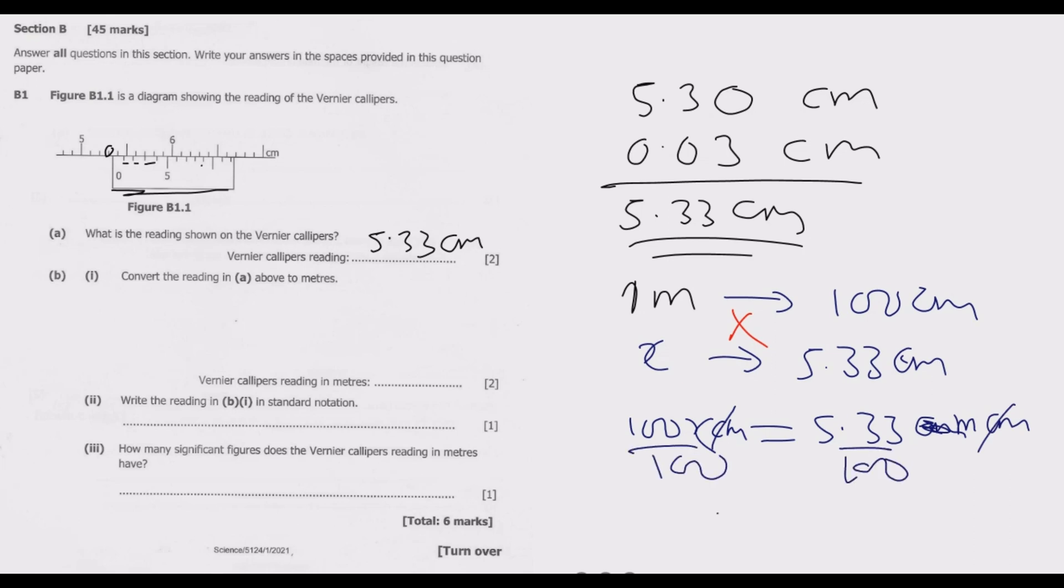The reading in B in standard form. Standard form, what happens is this point should move one, two. So the number should be between one and ten.